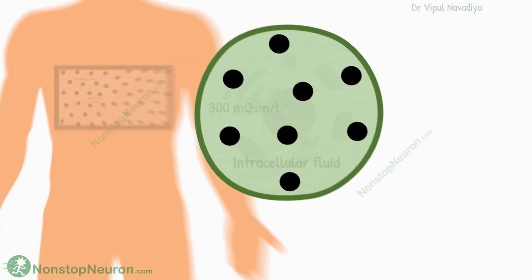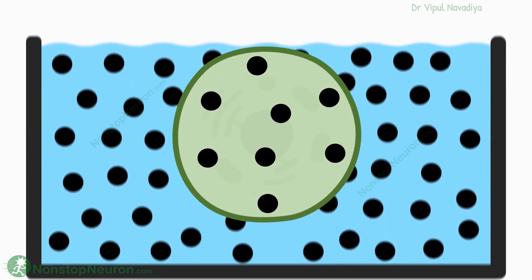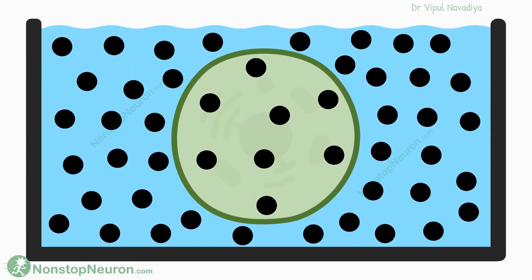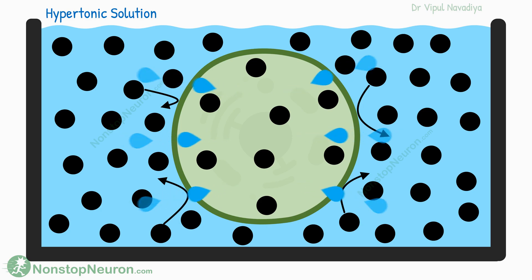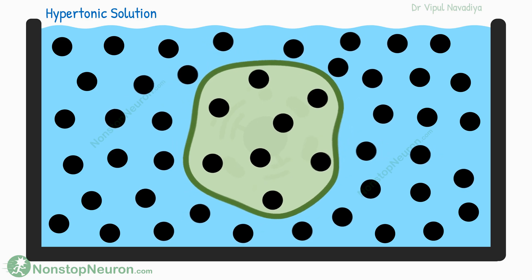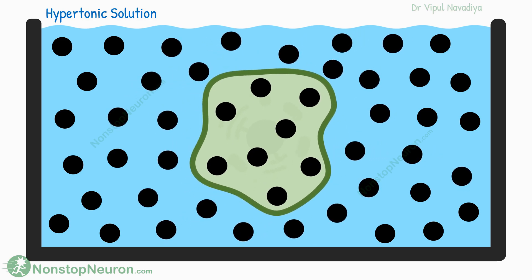Imagine that we remove the cell from the body and put it in a solution that has a higher concentration of solutes. The low density of solutes in the cell indicates a lower osmolarity, and high density outside indicates higher osmolarity. These solutes are also impermeant. Such a solution with a higher concentration of impermeant solutes is called a hypertonic solution. Because of the difference in osmolarity, the water moves out of the cell, so the cell shrinks. This happens until the osmolarity inside the cell becomes equal to that outside.